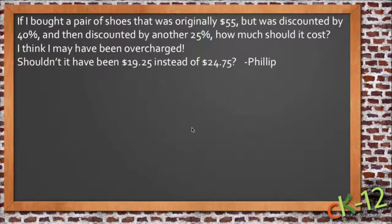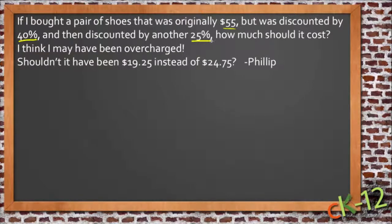Let's take a look at Philip's question. Philip says that if you originally bought a pair of shoes that was supposed to be $55, but it was discounted by 40%, and then discounted by another 25%, how much should it cost? He thinks he may have been overcharged, and he wants to know if it should have been $19.25 instead of $24.75.